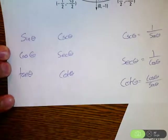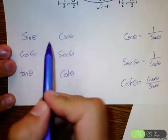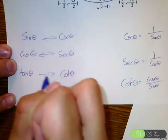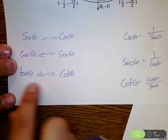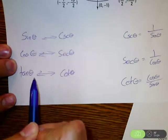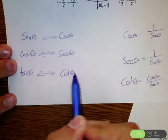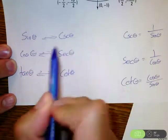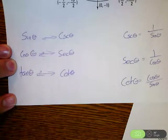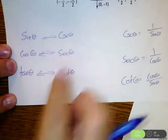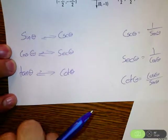To do cosecant, secant, and cotangent, the first thing you need to remember is how sine and cosecant are connected, cosine and secant are connected, tangent and cotangent are connected. If you know sine, cosine, and tangent, all you have to do is find the reciprocal. The reciprocal of sine is cosecant, the reciprocal of cosine is secant, the reciprocal of tangent is cotangent.